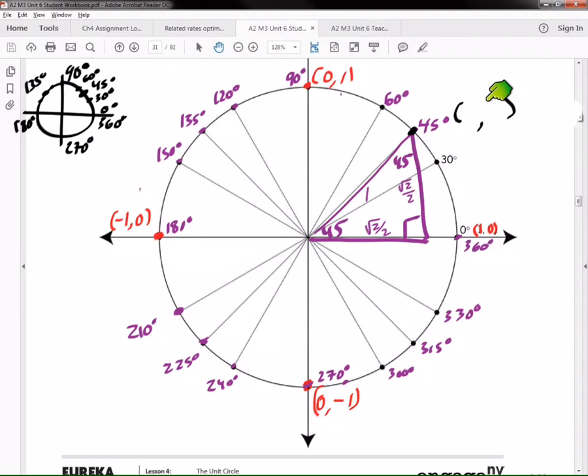We need the X and we need the Y. The X goes out this way. What is the length of this side? Square root of two over two. And what's the height? What's the Y value? What's the height? Square root of two over two. Oh, that's kind of neat.